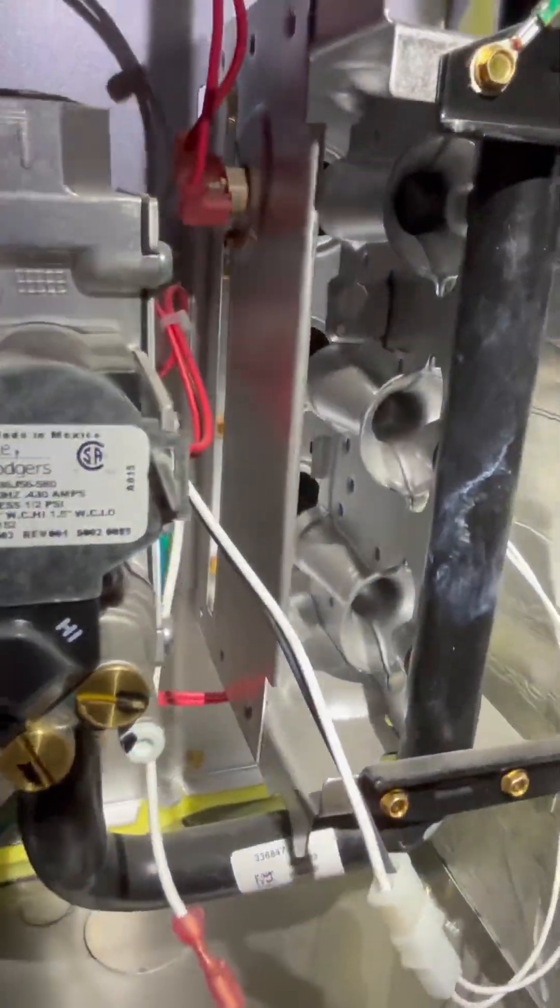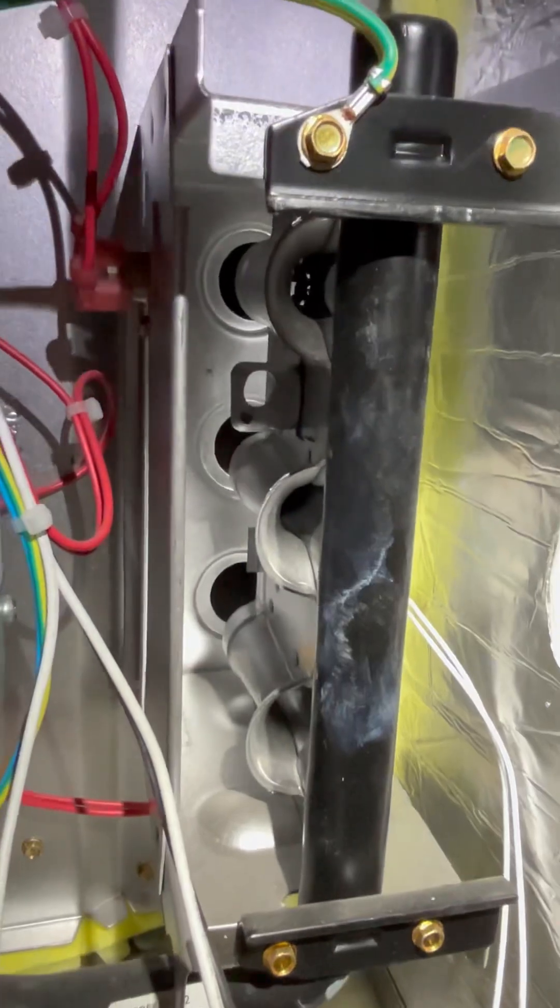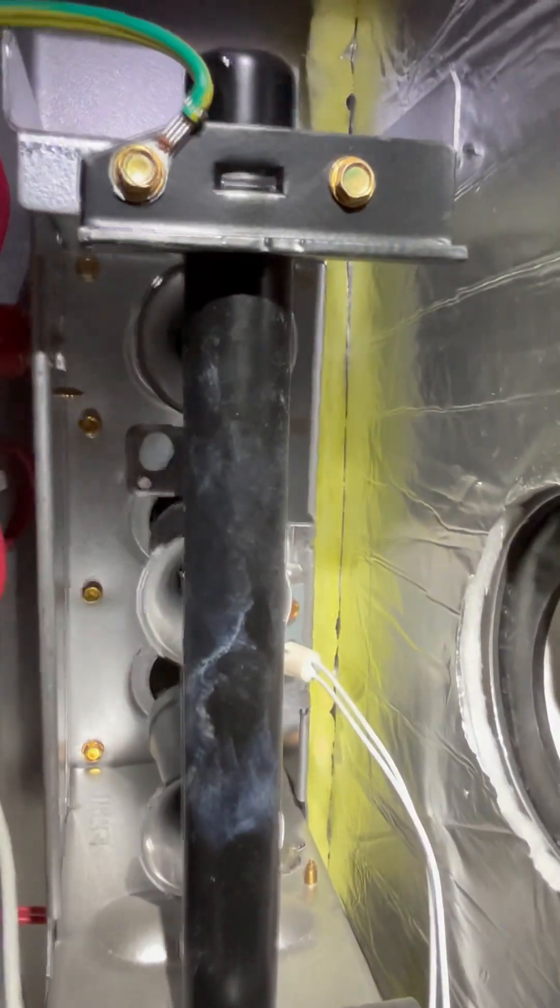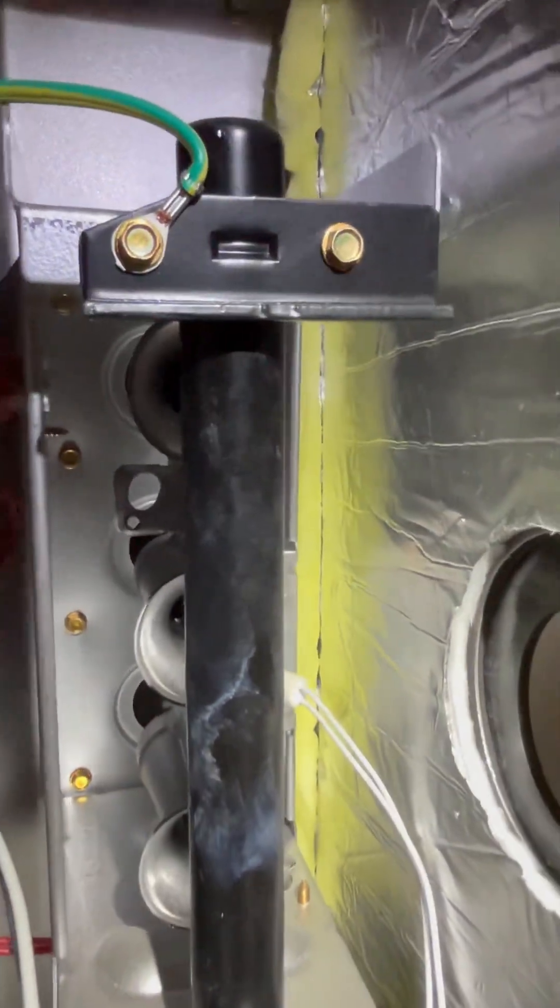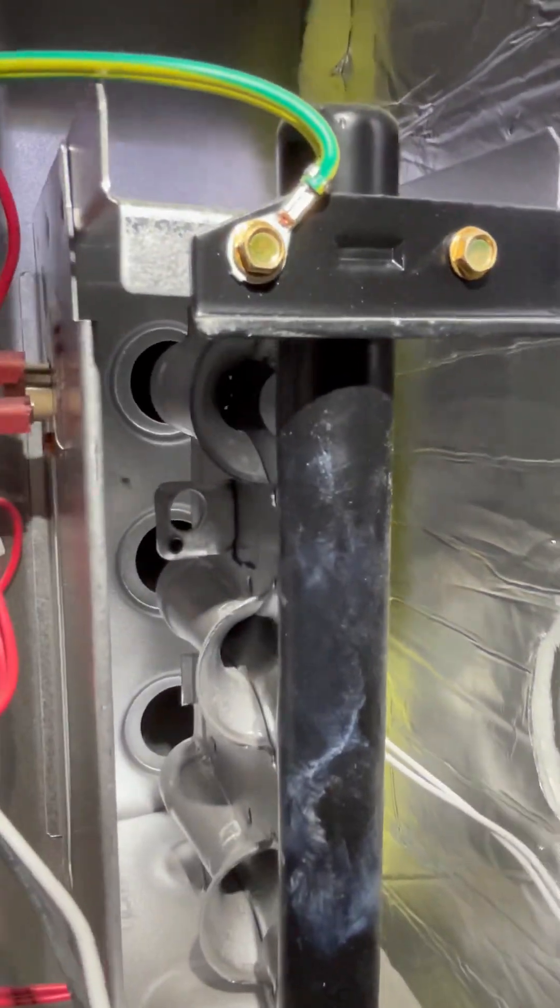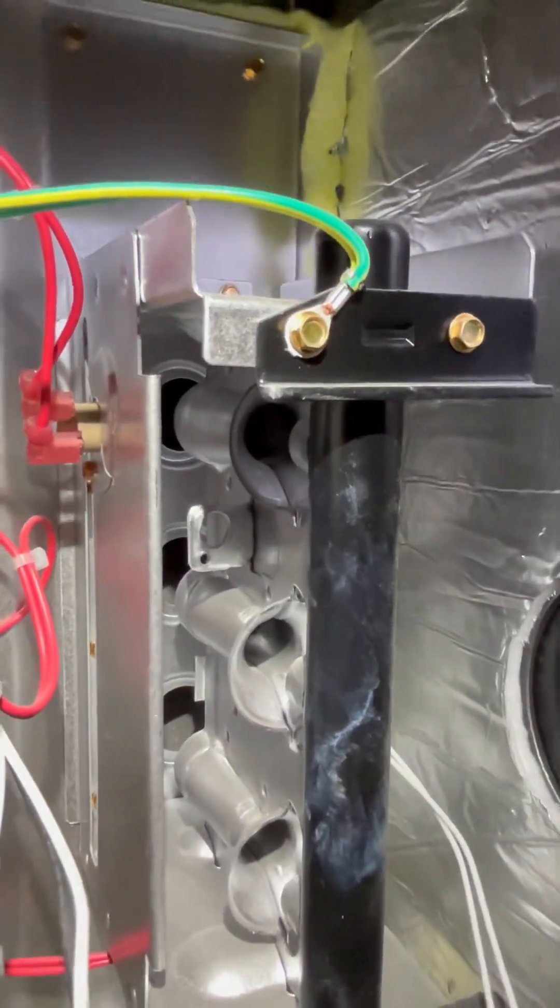Next, it's probably going to be your igniter. In most newer furnaces, or even as back as the late 90s, they started using hot surface igniters. That's what this guy is here. Hard to see, but it glows cherry red, and that's what ignites the fuel or the gas.